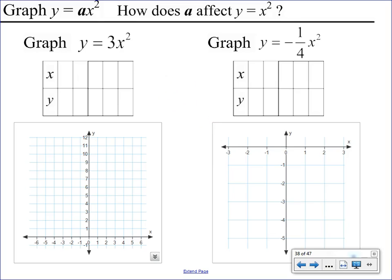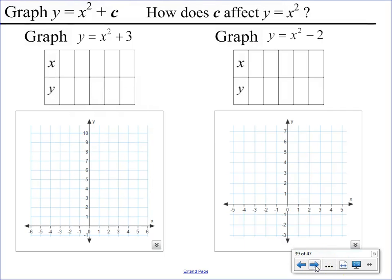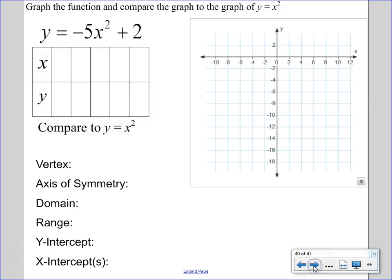So now we're going to explore what effect A has on the quadratic function. And once we figure that out, we'll take a look at what C does, and then also what B does. So let's go into Desmos and do some exploring.